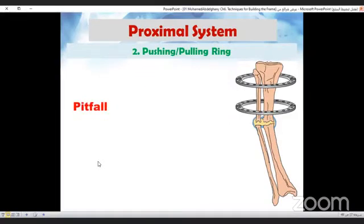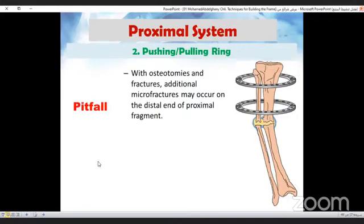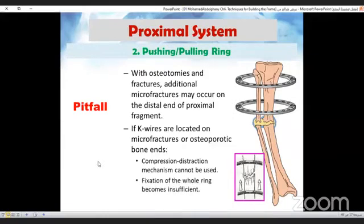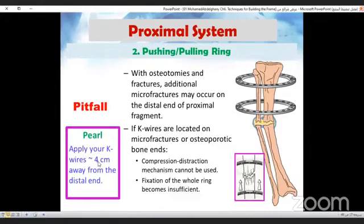However, microfractures at the distal end of the proximal fragment may be present. So if we apply K wires to these microfractures or osteoporotic bone ends, compression distraction mechanism cannot be used and fixation of the whole ring becomes insufficient. Thus, you must apply your K wires about four centimeters away from this weak zone.